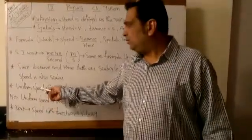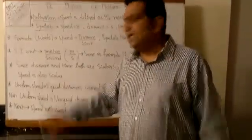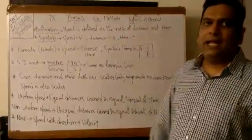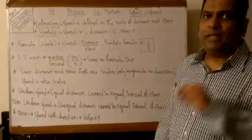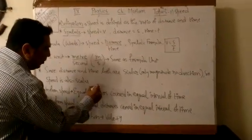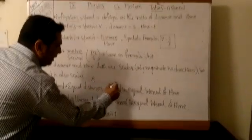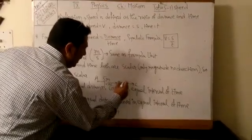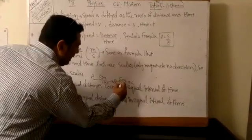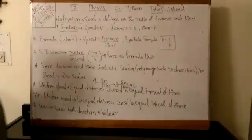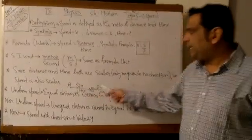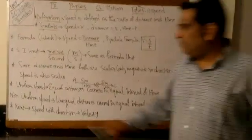Speed is of two types — uniform speed and non-uniform speed. What is uniform speed? When equal distances are covered in equal intervals of time, that is called uniform speed. For example, an object goes from point A to point B — 5 meters in 10 seconds — then again from B to C, 5 meters in 10 seconds, and so on. Equal distances are covered in equal intervals of time, so this is uniform speed.